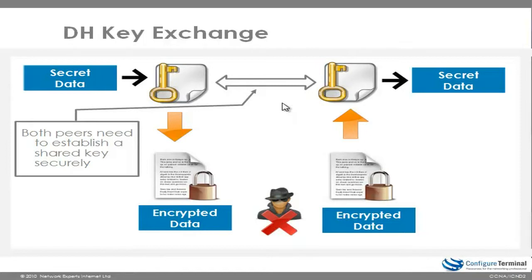When two peers want to set up a VPN, they use Diffie-Hellman to work out a shared key. The reason we need that shared key is that symmetric key algorithms like AES require the same key be used on both sides. And the reason we use AES is because it's good for bulk encryption. Once the Diffie-Hellman key exchange has taken place, we can create a shared secret for AES, and AES can be used for bulk encryption of our data, which can be sent across the insecure internet and only decrypted by the receiving party.